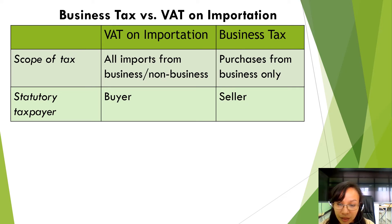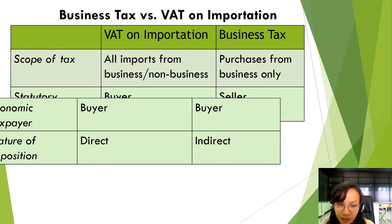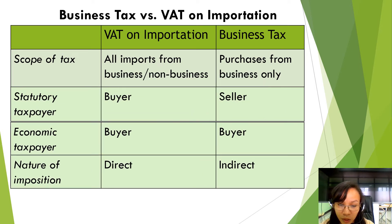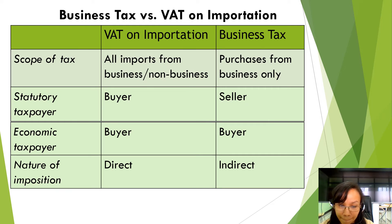The economic taxpayer is the true taxpayer or the one who really pays the actual tax. Under VAT on importation, the economic taxpayer is the buyer itself. Therefore, it is a direct nature of imposition because the economic and statutory taxpayer are the same. While in business tax, the economic taxpayer is the buyer; therefore, it is an indirect imposition of tax.